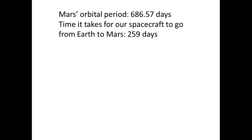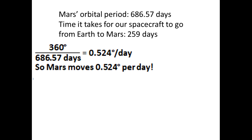Since Mars completes one whole revolution around the Sun in 686.57 days, I can find how many degrees it moves per day. So if I take 360 degrees and divide by 686.57, that gives me 0.524 degrees per day. So that means Mars moves 0.524 degrees per day.